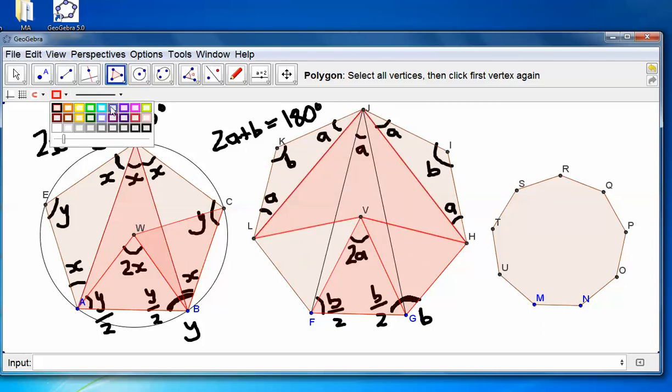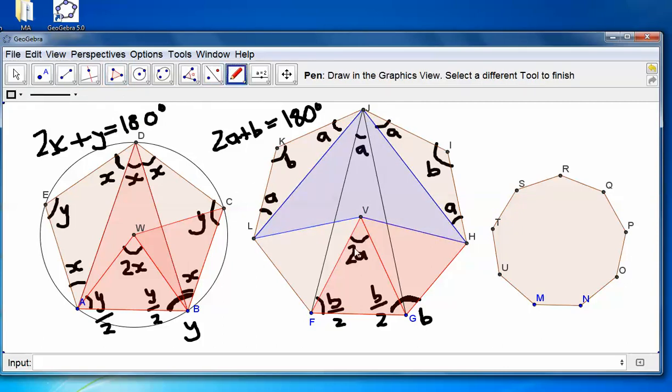So, I can construct a polygon here. And again, I'm going to try and change the colour of this. There we go. And as you can see, this is 2A. Which means that, because this is congruent, this has to be 2A. And this has to be 2A.